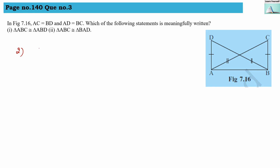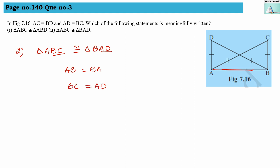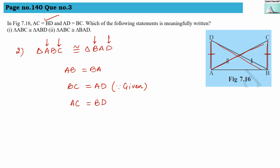Checking statement 2 — triangle ABC congruent with triangle BAD: AB equals BA — they are the same common side. BC equals AD — it is already given in the question that BC equals AD. AC equals BD — also given in the question. All three criteria are fulfilled, so this statement is meaningful and correctly written.